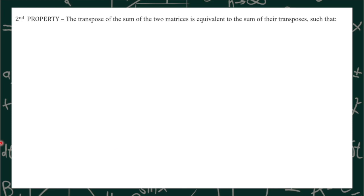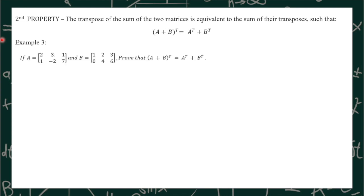For our second property, the transpose of the sum of two matrices is equivalent to the sum of their transposes, such that the transpose of (A + B) is equal to the transpose of A plus the transpose of B. Let's take a look at example number 3. If A equals [2, 3, 1, 1, -2, 7] and B equals [1, 2, 3, 0, 4, 6], prove that the transpose of quantity A plus B equals the transpose of A plus the transpose of B.